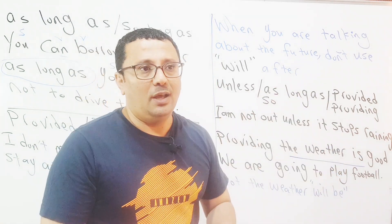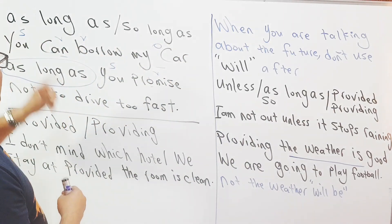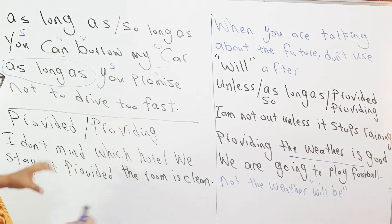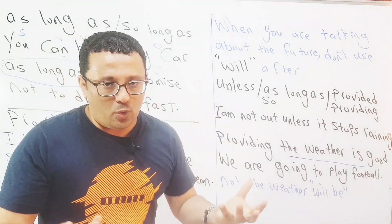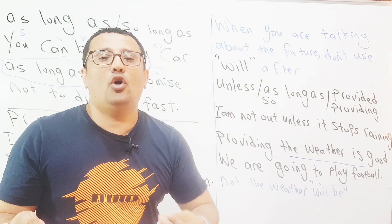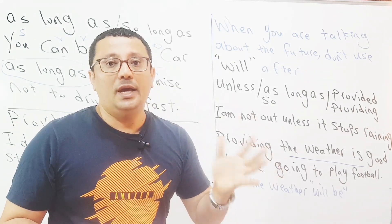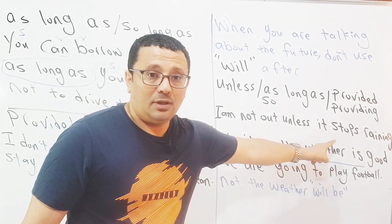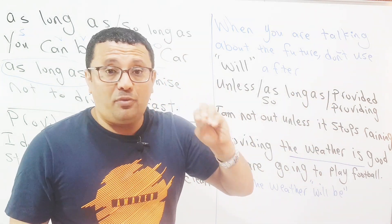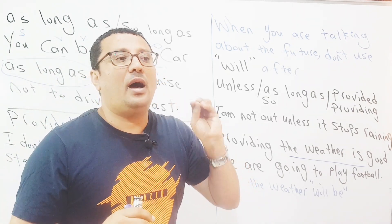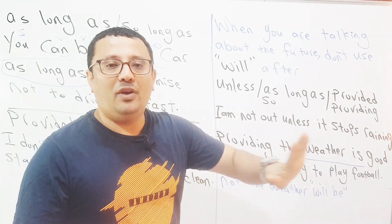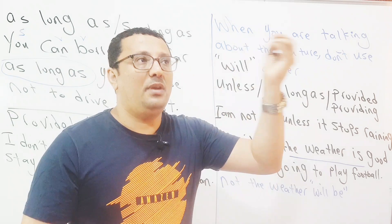باختصار درس اليوم is very simple - بسيط جدا. تكلمنا على 'as long as', 'so long as', 'provided', 'providing' لوضع الشروط، وأخذنا عليها أمثلة. وأضفنا 'unless' في الآخر، وتعني: ما لم - شريطة - طالما. تذكر: لا تستخدم 'will' بعد هذه الكلمات عندما تتحدث عن المستقبل - استخدم المضارع البسيط، يعني الفعل بعدهم في حالة المضارع البسيط بمعنى المستقبل.